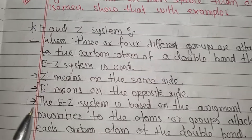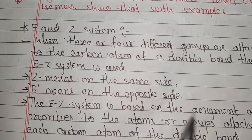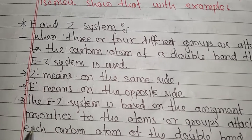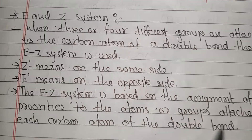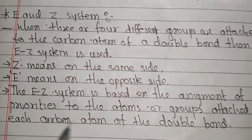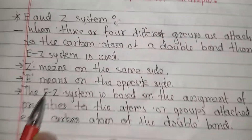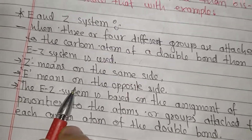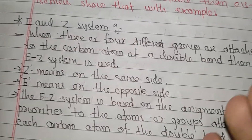The E/Z system is based on the assignment of priorities to the atoms or groups attached to each carbon atom of the double bond. Z means groups of higher priority are on the same side; E means they are on the opposite side.